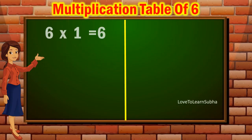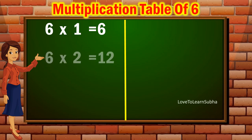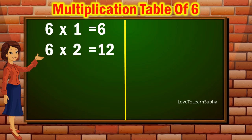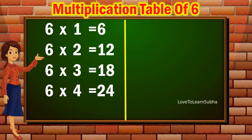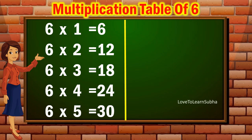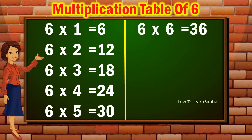6 ones are 6. 6 twos are 12. 6 threes are 18. 6 fours are 24. 6 fives are 30. 6 sixes are 36.